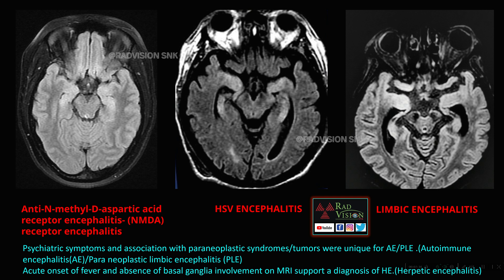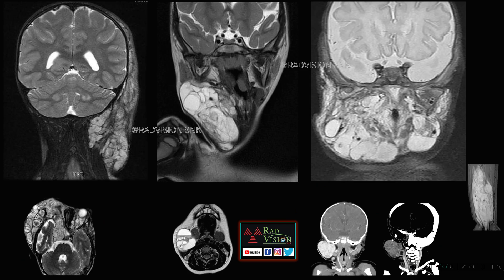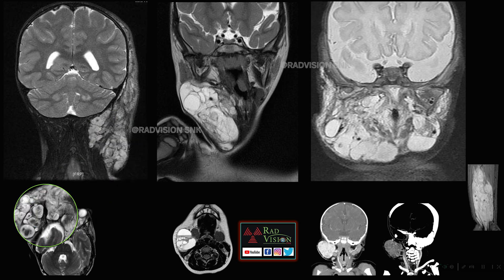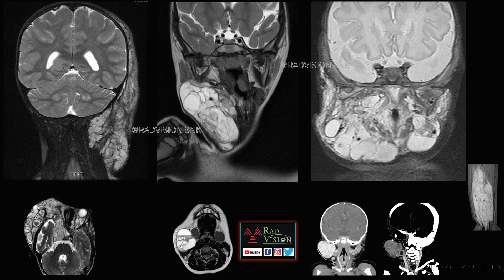Next, three different cystic lesions in the neck have similar imaging appearances. The first is a cystic lesion in the neck extending into the paratracheal regions, classically giving a bag-of-worms appearance with a target sign. This is a classical case of plexiform neurofibroma.